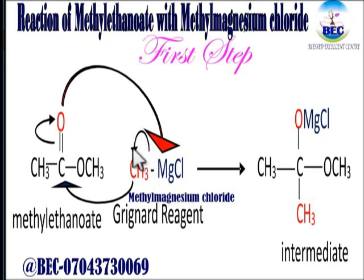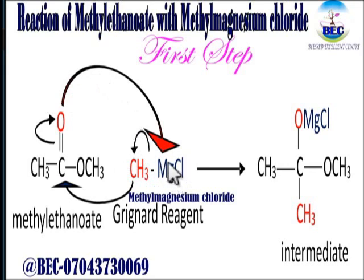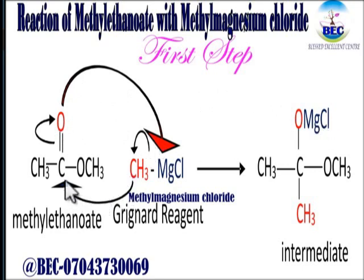Coming to the Grignard reagent — we have methyl magnesium chloride. When you cleave this bond according to the direction of the arrow, the methyl group in red will be negatively charged and the magnesium will be positively charged. The next thing is the exchange of charges: the magnesium chloride that is positively charged will be attached to the oxygen that is negatively charged, leading to the formation of O-MgCl.